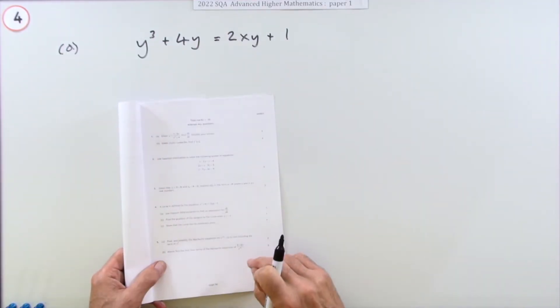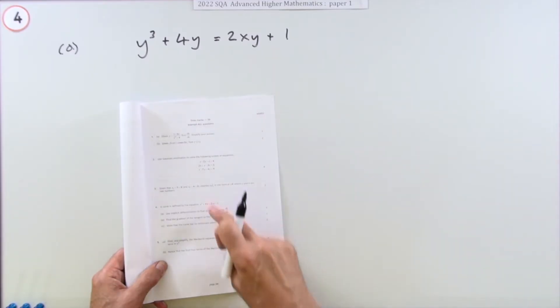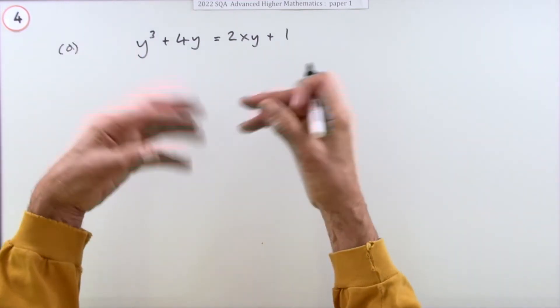Number four from the 2022 Advanced Higher paper one: implicit differentiation. A curve is defined by the equation given here, and you need to find an expression for dy/dx using implicit differentiation.